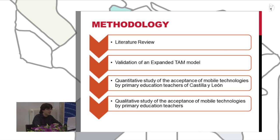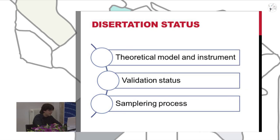The methodology we are going to follow is divided into four activities. First, an iterative review — we are going to perform a meta-analysis using a systematic iterative review methodology. We are also going to build, validate, and expand the TAM model and its instrument. After this model is validated, we are going to use it to perform a quantitative study of mobile technology acceptance by the primary education teachers of Castilla-La Mancha, complemented with a qualitative study in the same context. Currently, we have already built our theoretical model and instrument, are in the validation stage, and have also contacted the regional authority to gather the information necessary to conduct the sampling process, which we have recently finished.